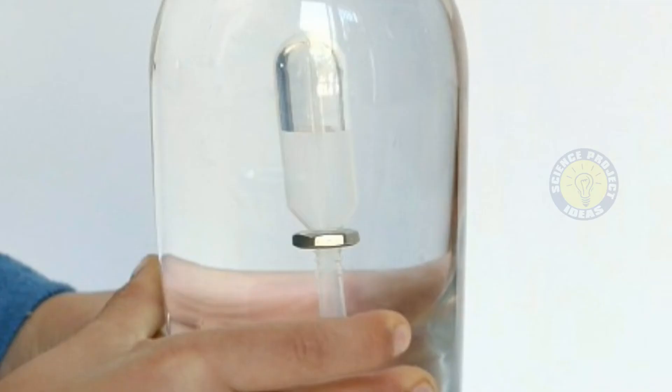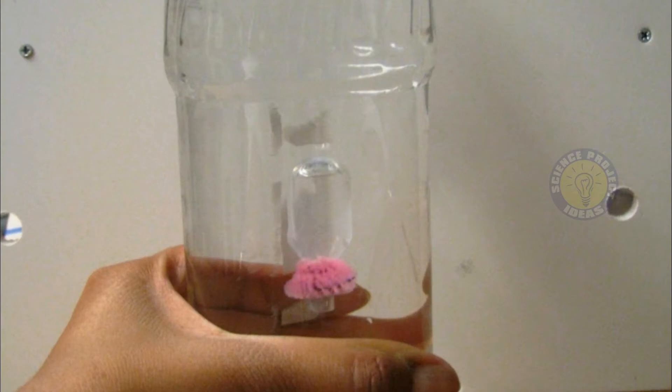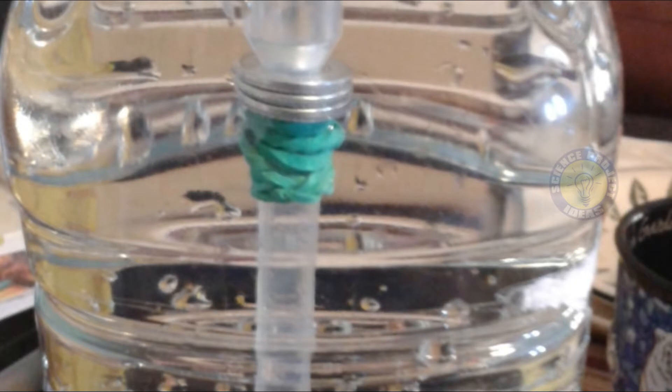What is a Cartesian diver? If you've never seen a Cartesian diver before, it's basically a little dropper or other material. There's so many options, floating in a bottle of water.